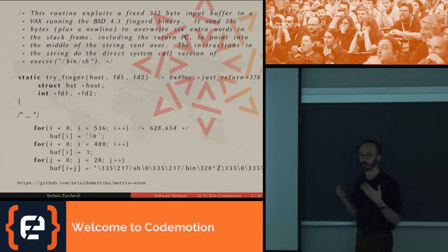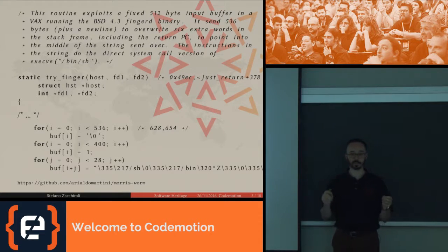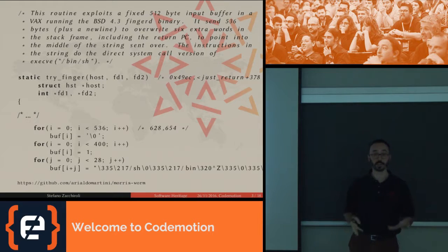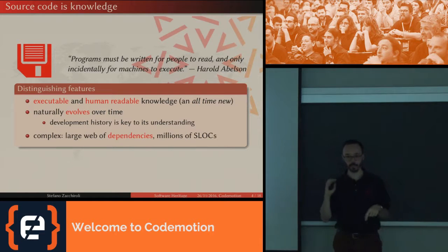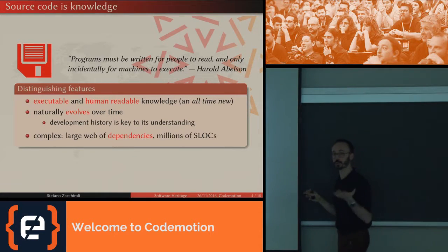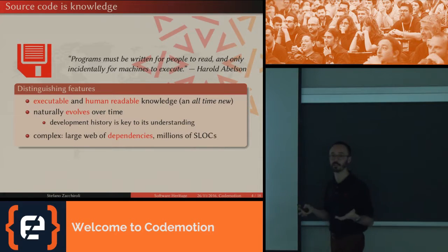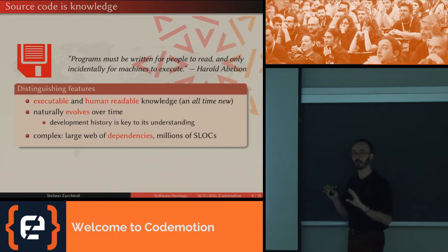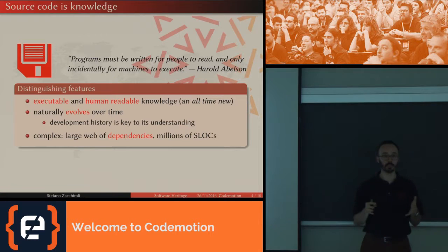So what do these two pieces of code have in common? Not much — not in purpose, not in programming languages, not in style — but they're both source code. As such they contain much more information than the actual bits that were run either on the Apollo 11 or on many computers around the internet. In source code you find structure, you find comments, and in general you find knowledge. Source code is not just a way to create software executed on machines; it's actually much more than that — it's an all-time new kind of knowledge generated by humans.